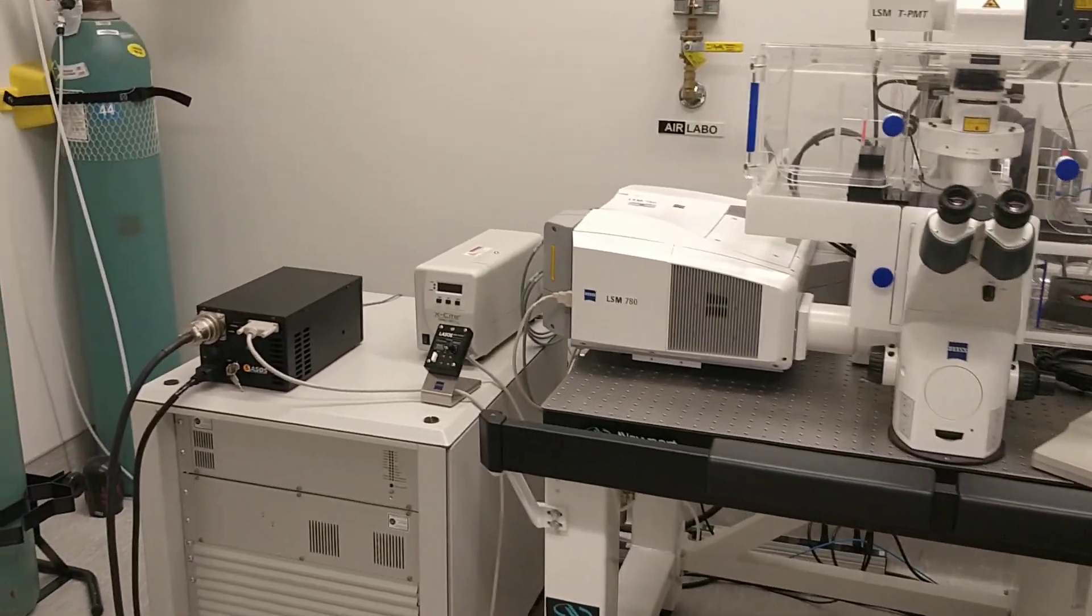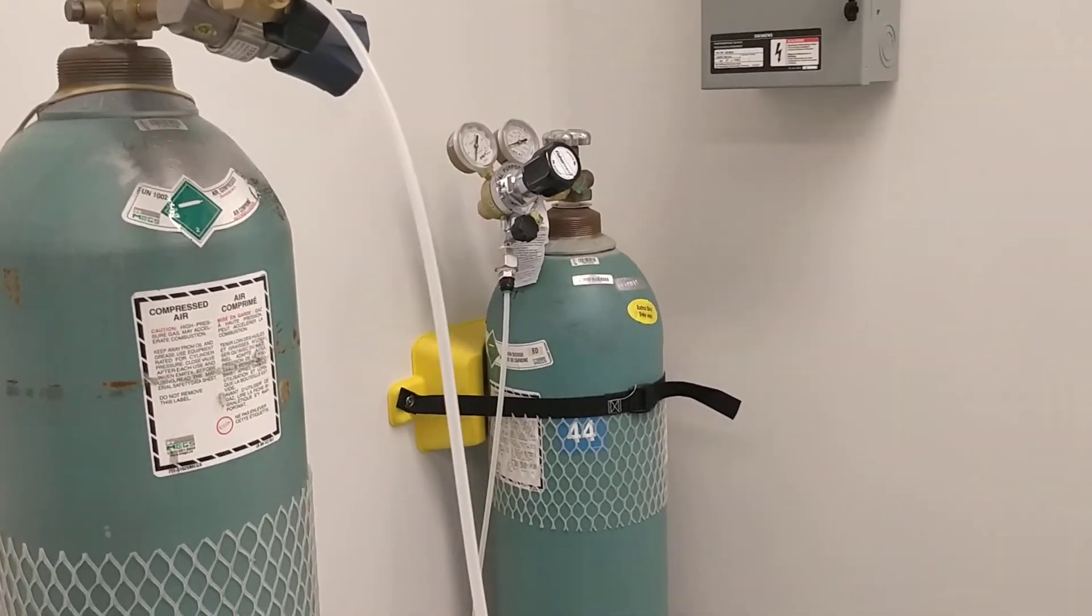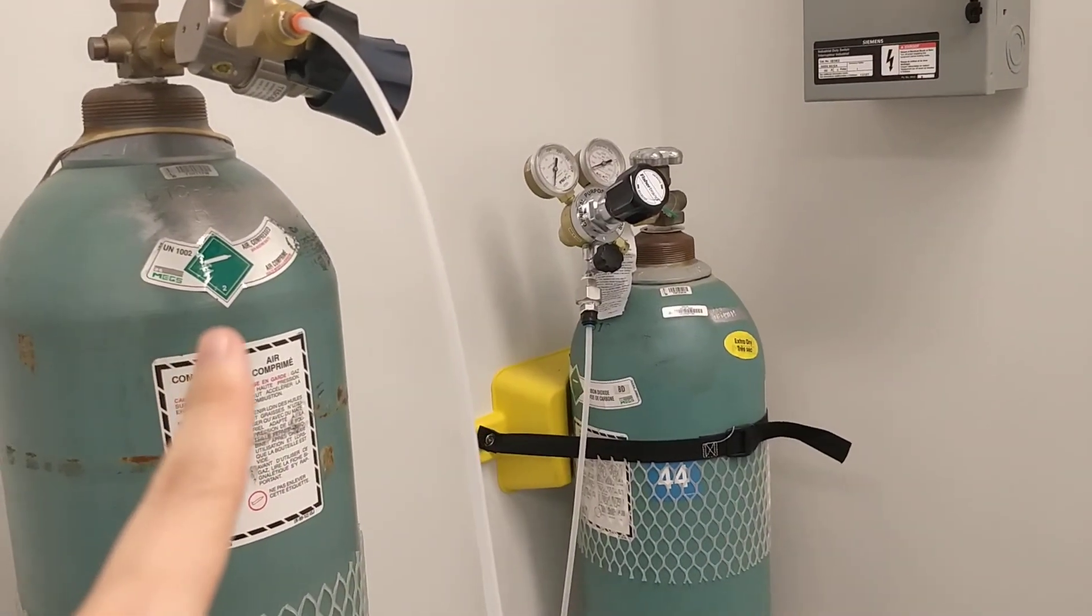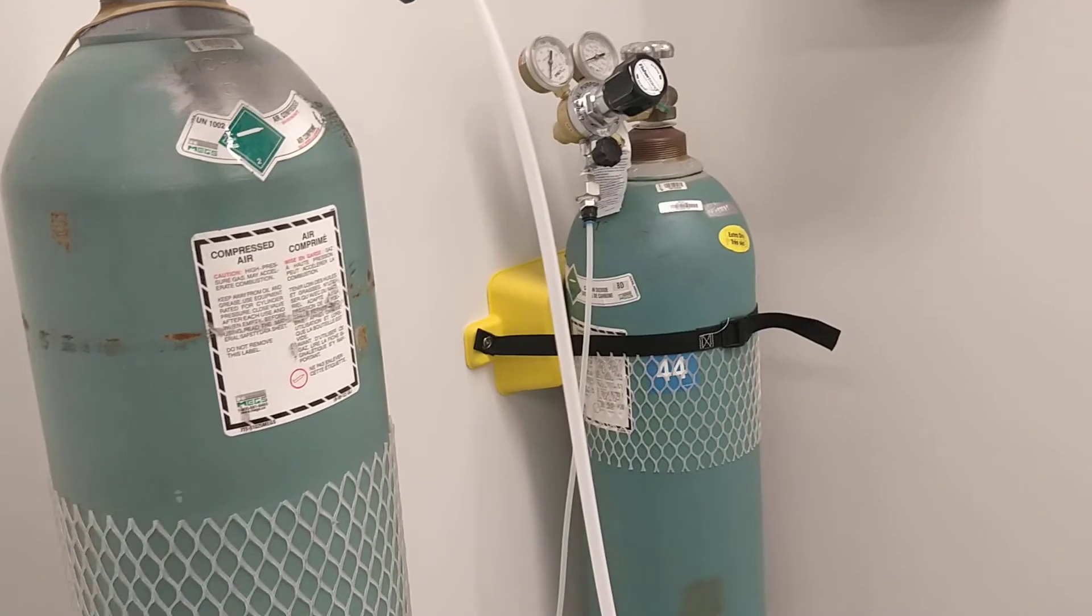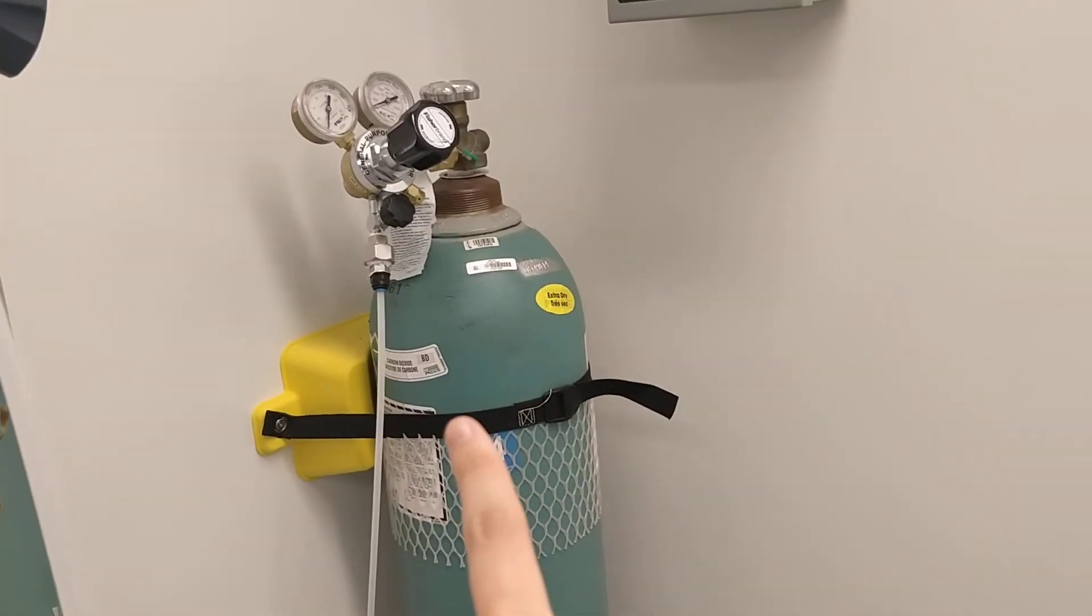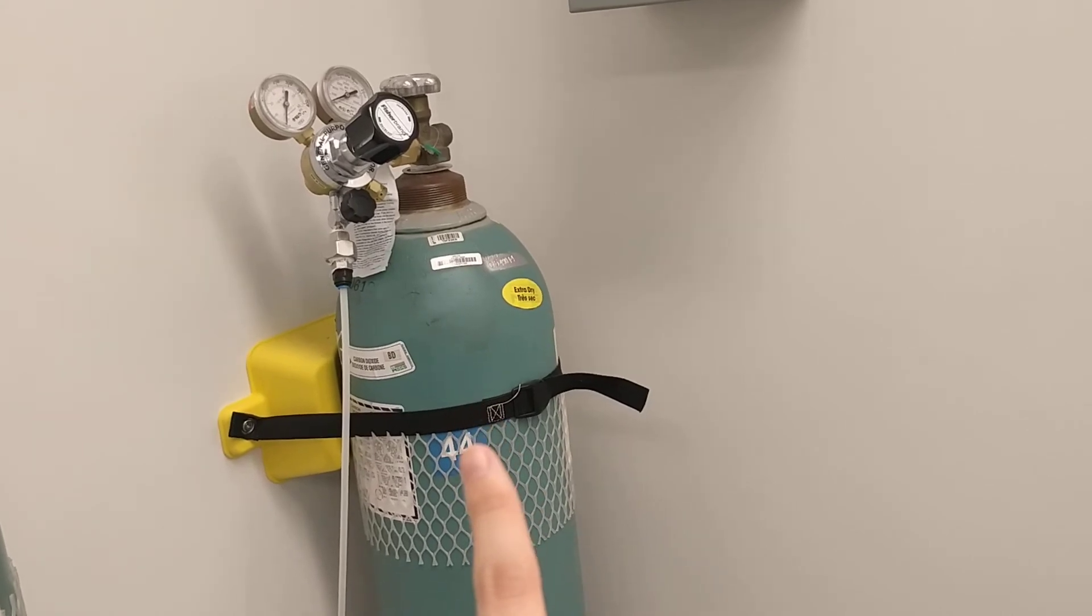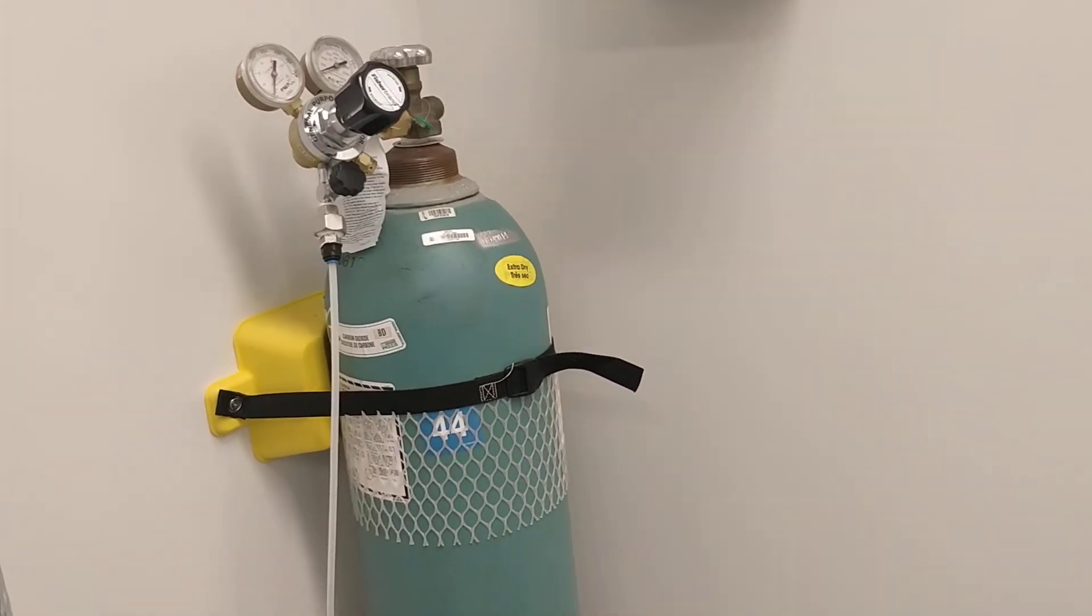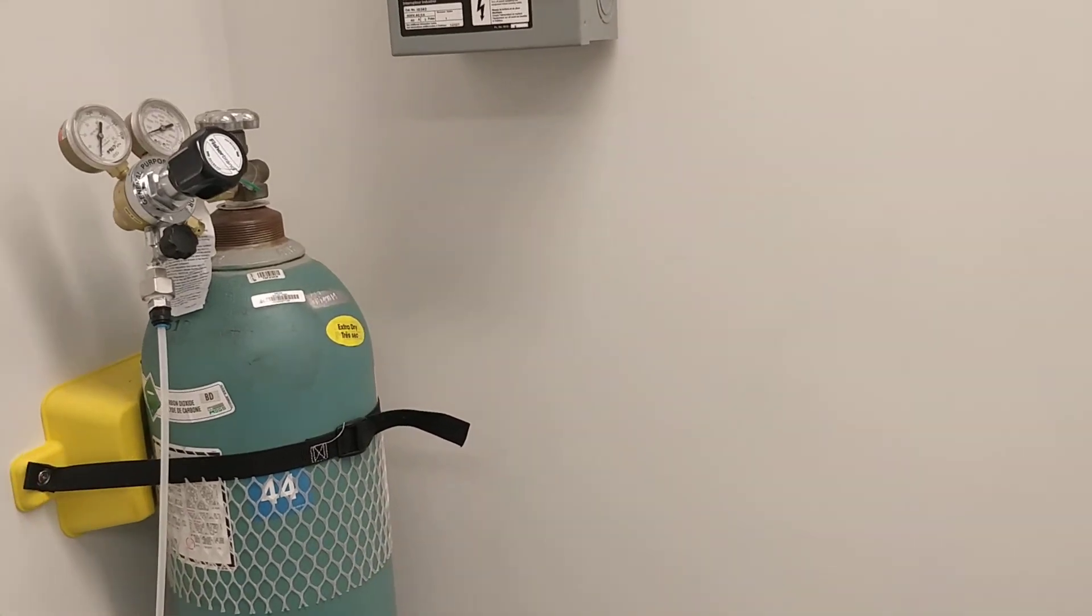So first, from here, you do have the two tanks. You can see one of them is air compressed, so that is for the anti-vibration table, and this one is for CO2. This is usually for if you're doing a live cell sample, then you do need to keep the temperature and CO2 at the physiological level.